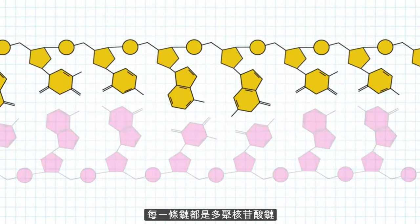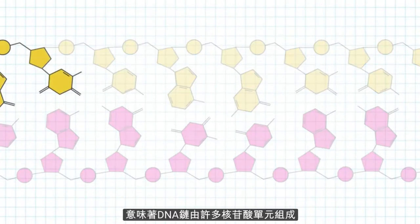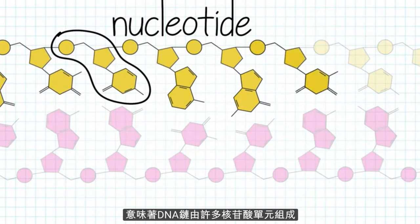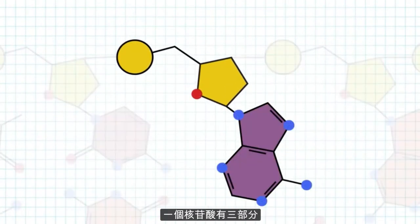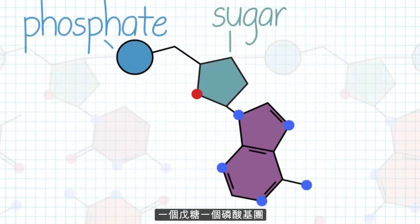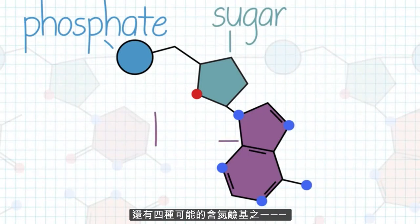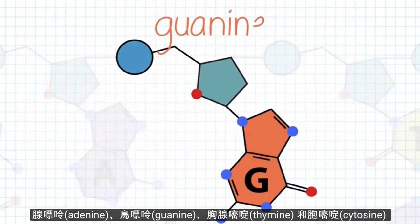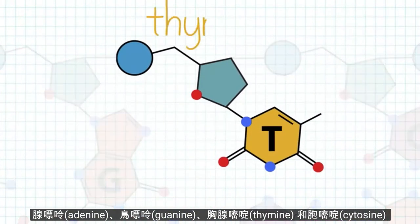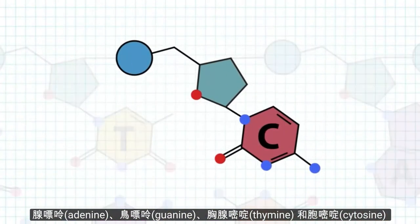Each strand is a polynucleotide, meaning the strand is made up of many individual units called nucleotides. A nucleotide has three components: the 5-carbon sugar, a phosphate group, and one of four possible nitrogenous bases: adenine, guanine, thymine, and cytosine.